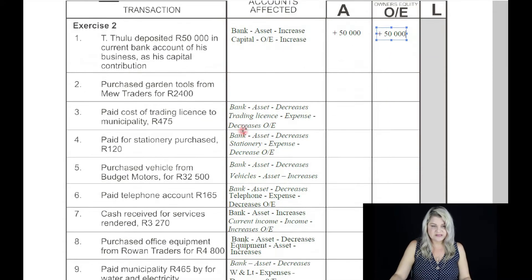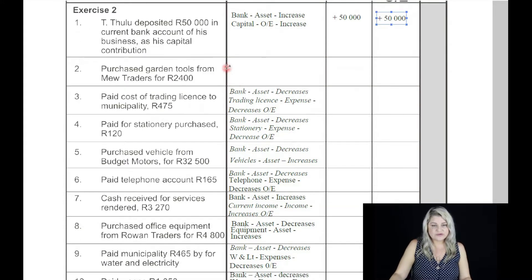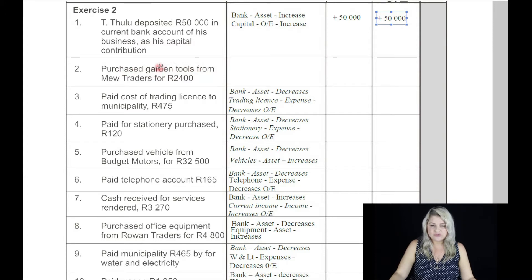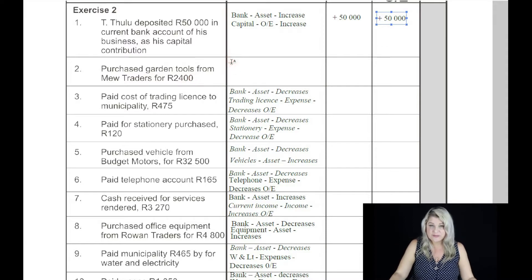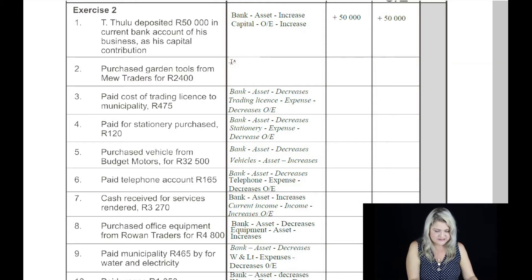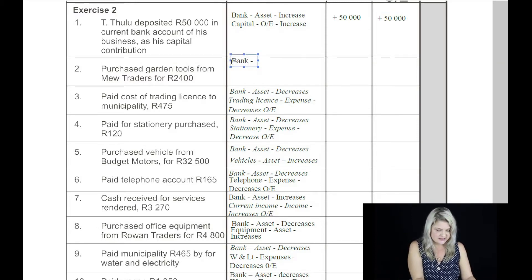The next transaction: purchase garden tools from new traders for 2,400 Rand. The two accounts that are affected by this transaction are garden tools, which we can say is equipment, and from new traders — they're paid cash. So we assume they're paid cash because we are in Grade 8. So the first account that will be affected is bank, because the money had to come from the bank account. We know that the bank is an asset.